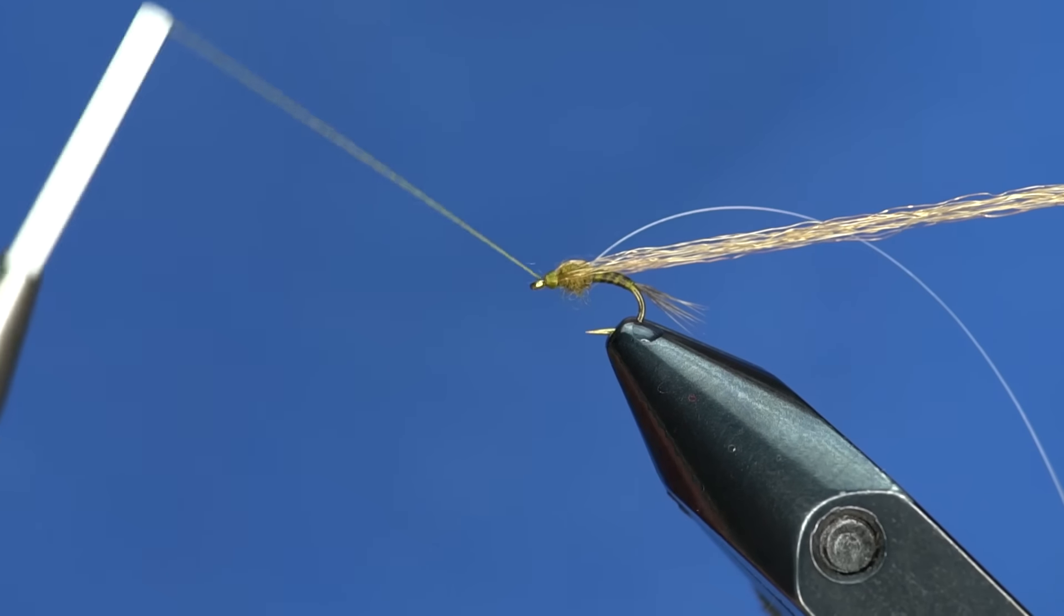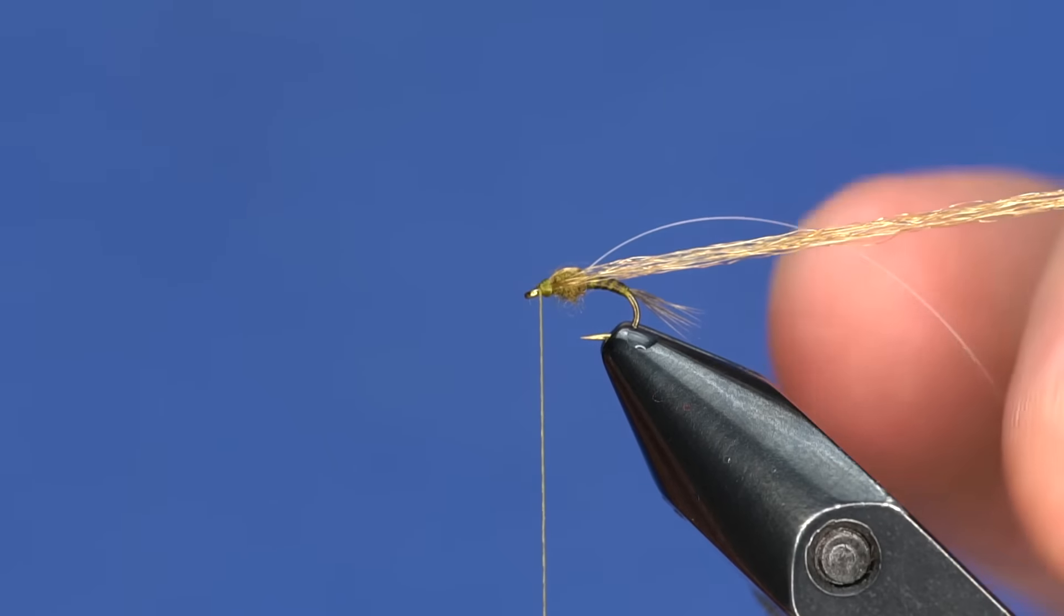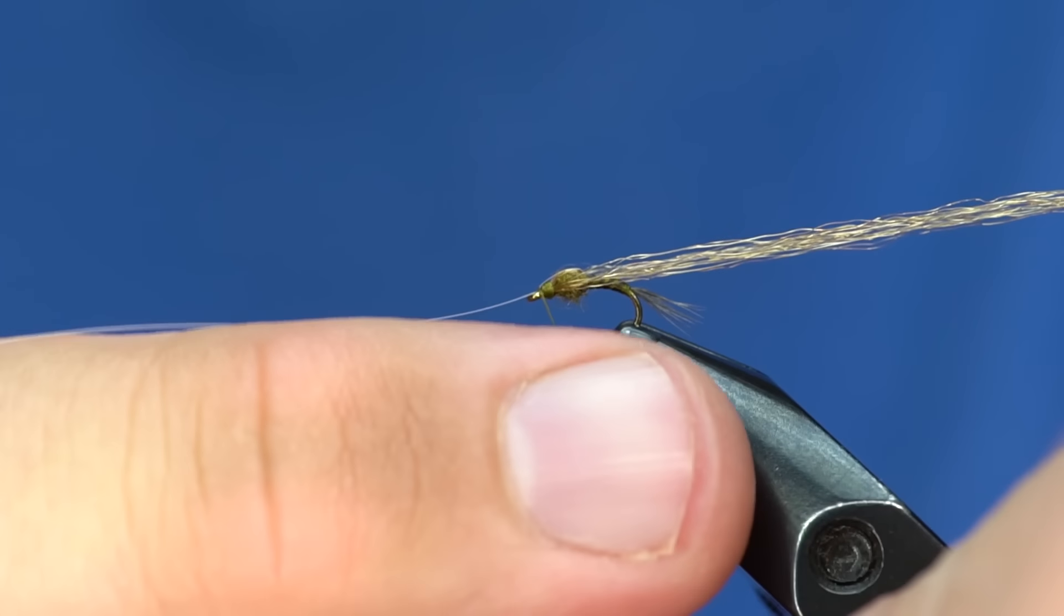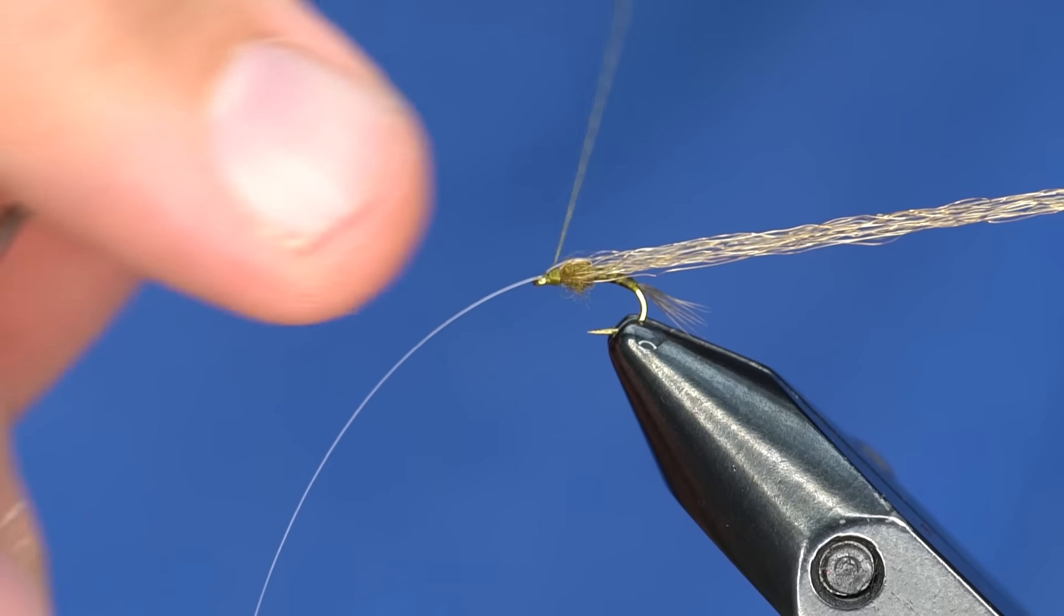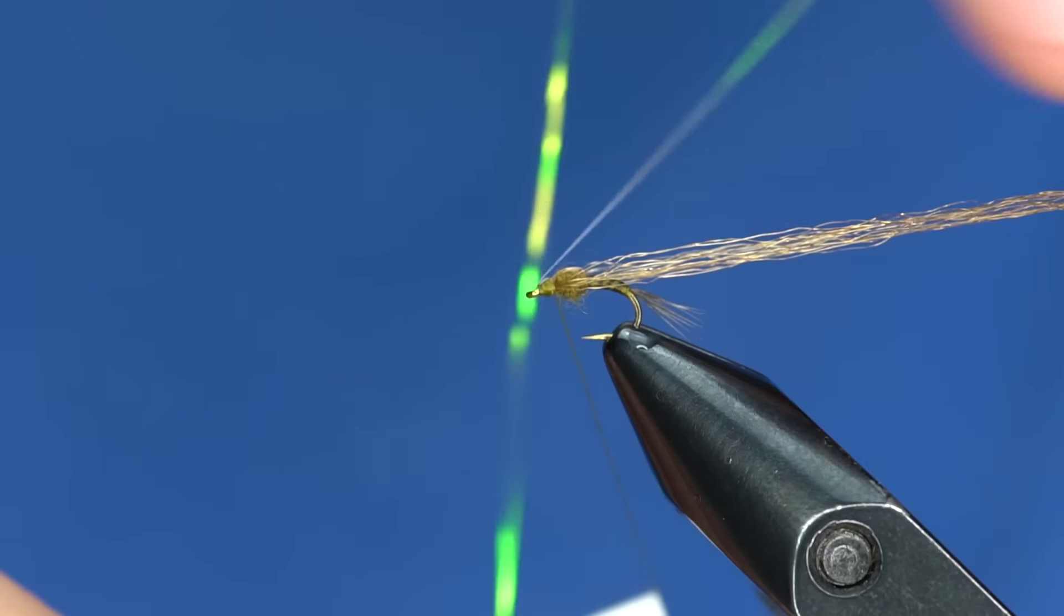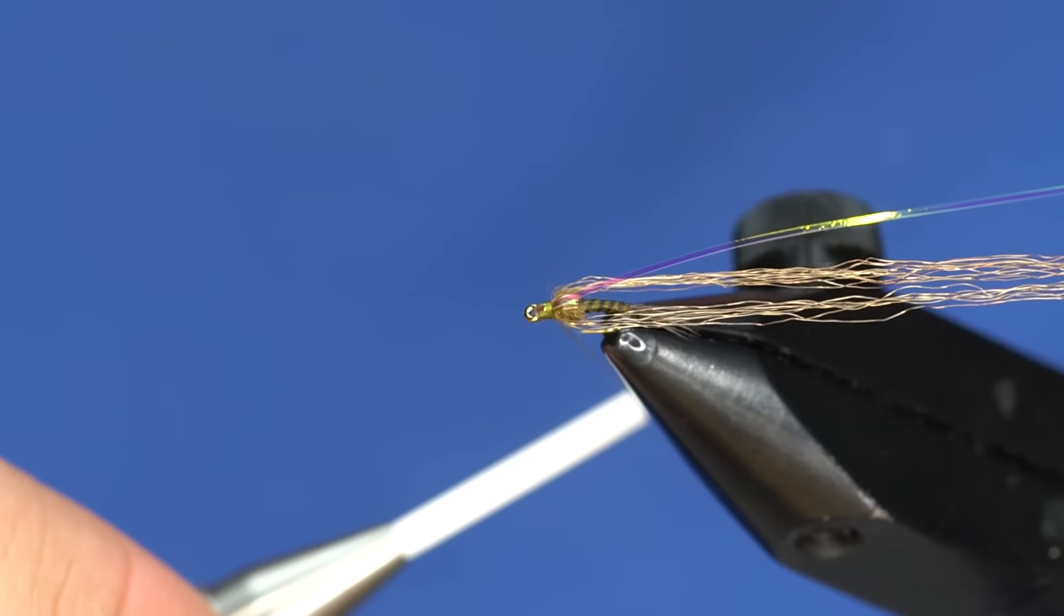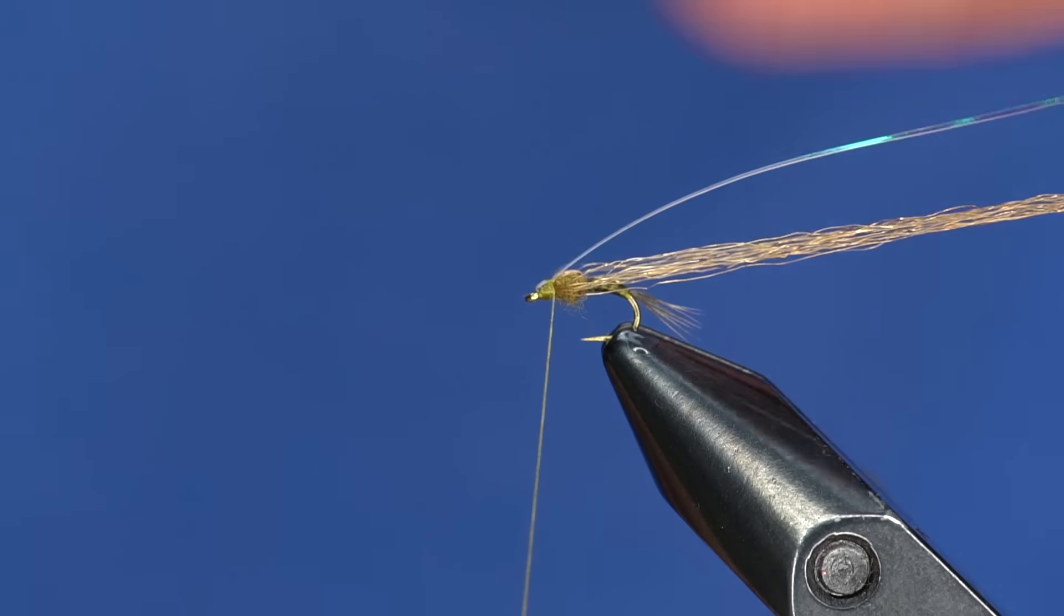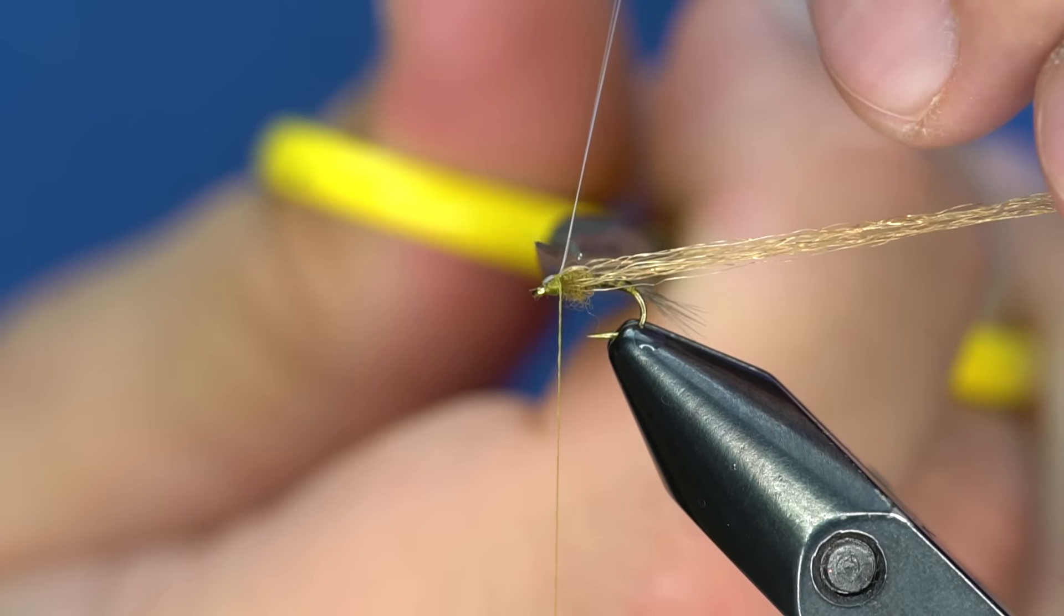Now, this is kind of a tricky part of the fly. My thread's right behind the eye right now. I'm going to pull this over and do one wrap of thread right behind the eye. Then I'm going to move my thread back to right in front of the wing case now. Pull this flash back over the top. You can see it kind of gives it that segmented look. It's got a tiny little head of crystal flash in the front of the fly.